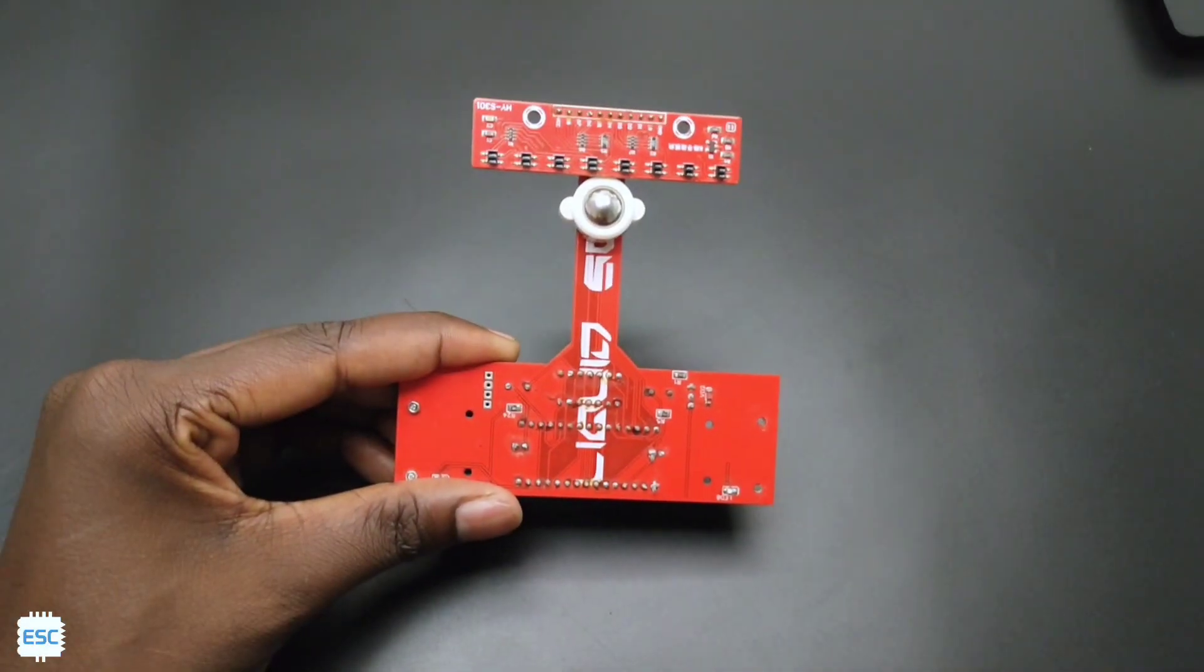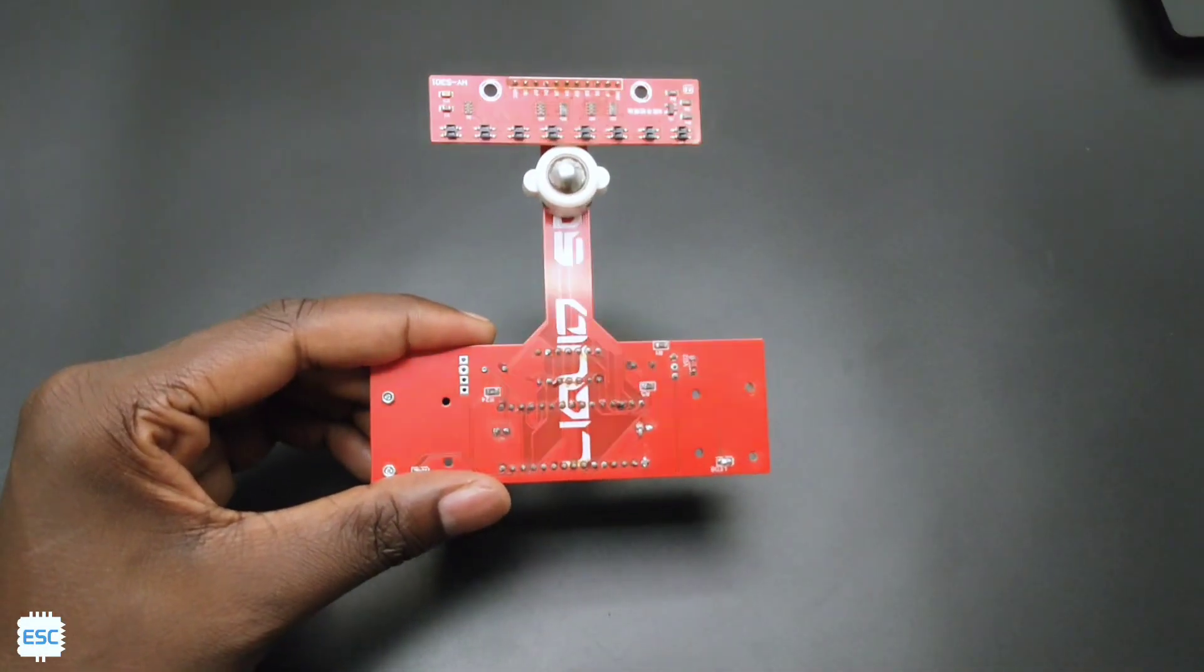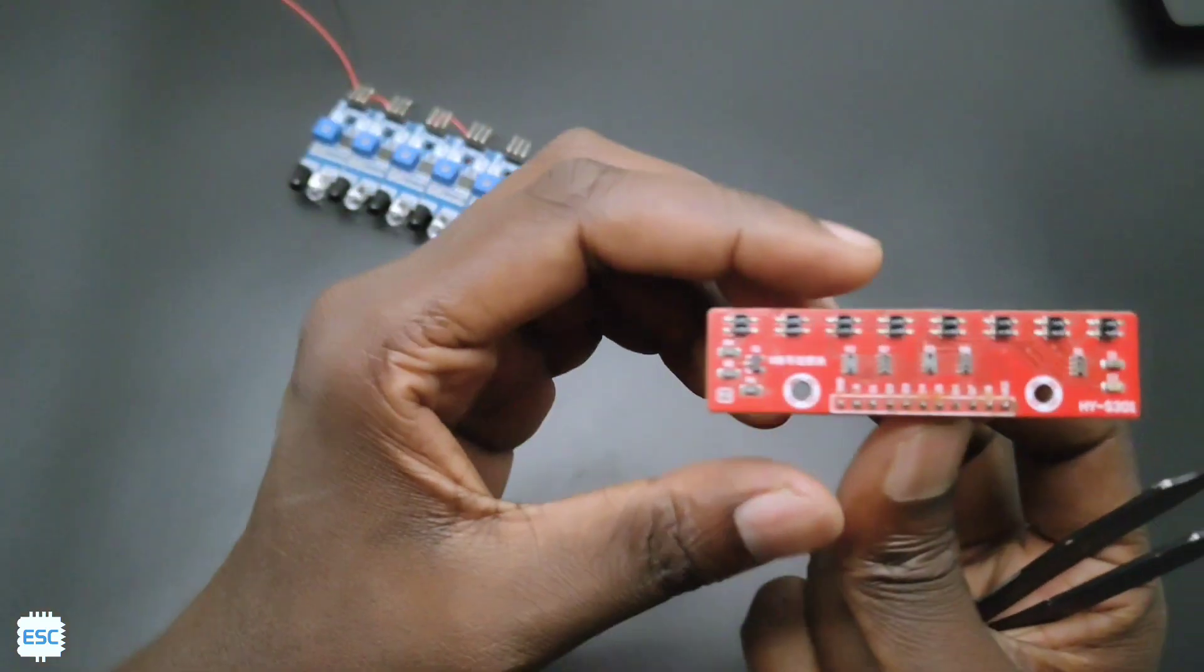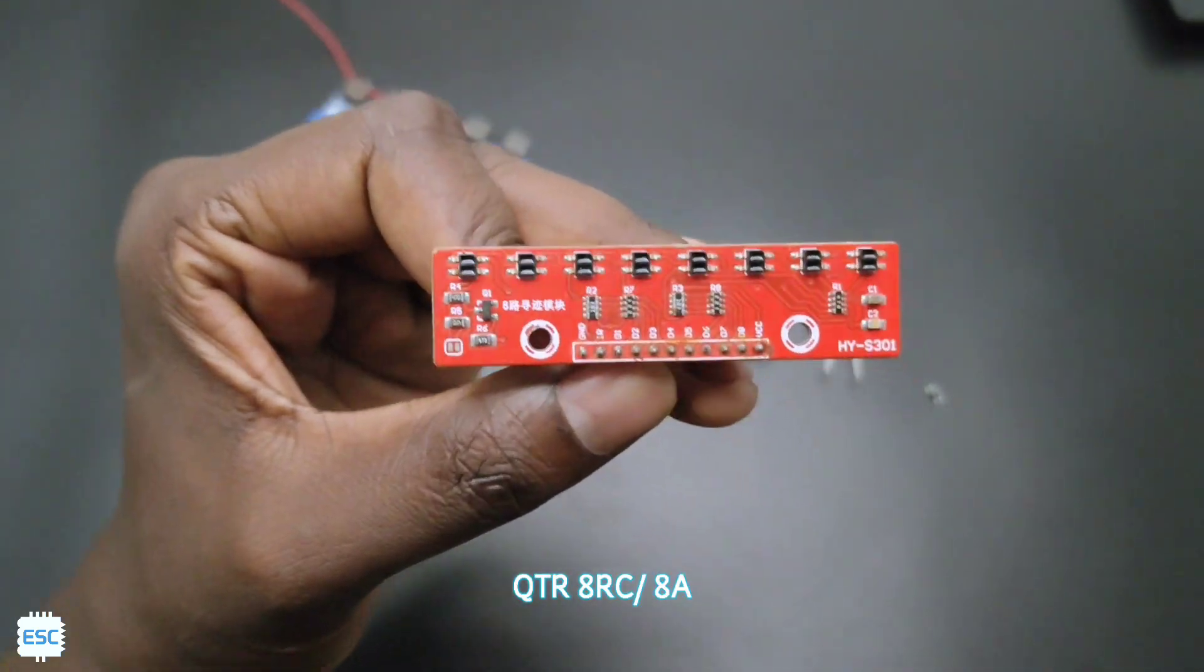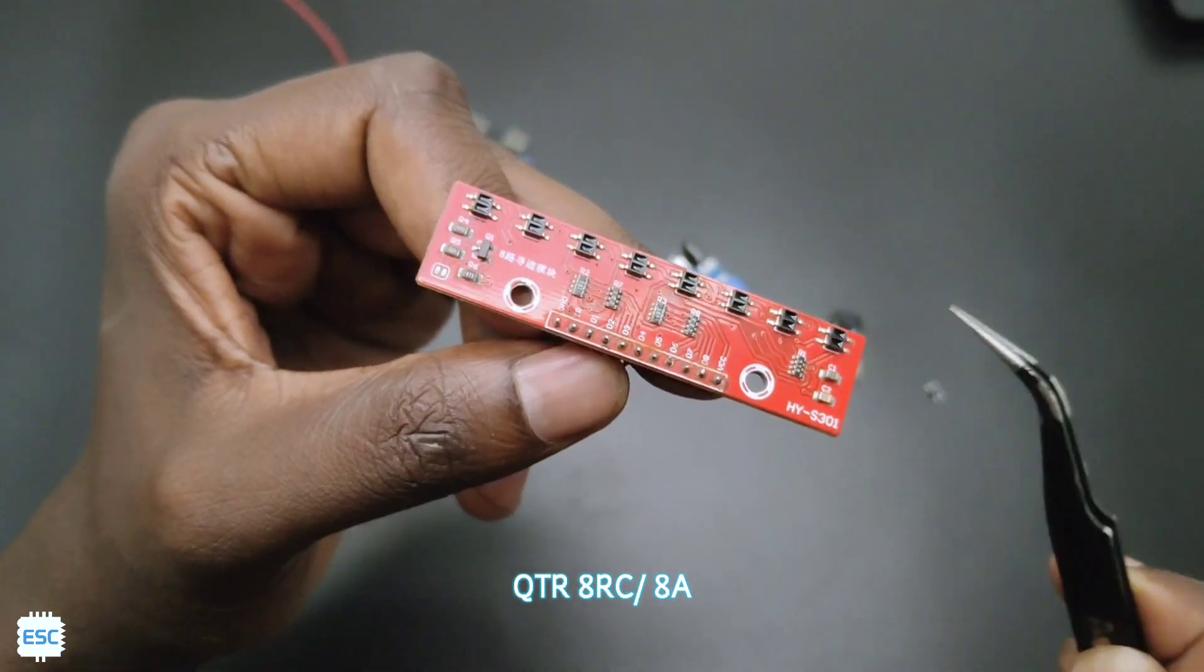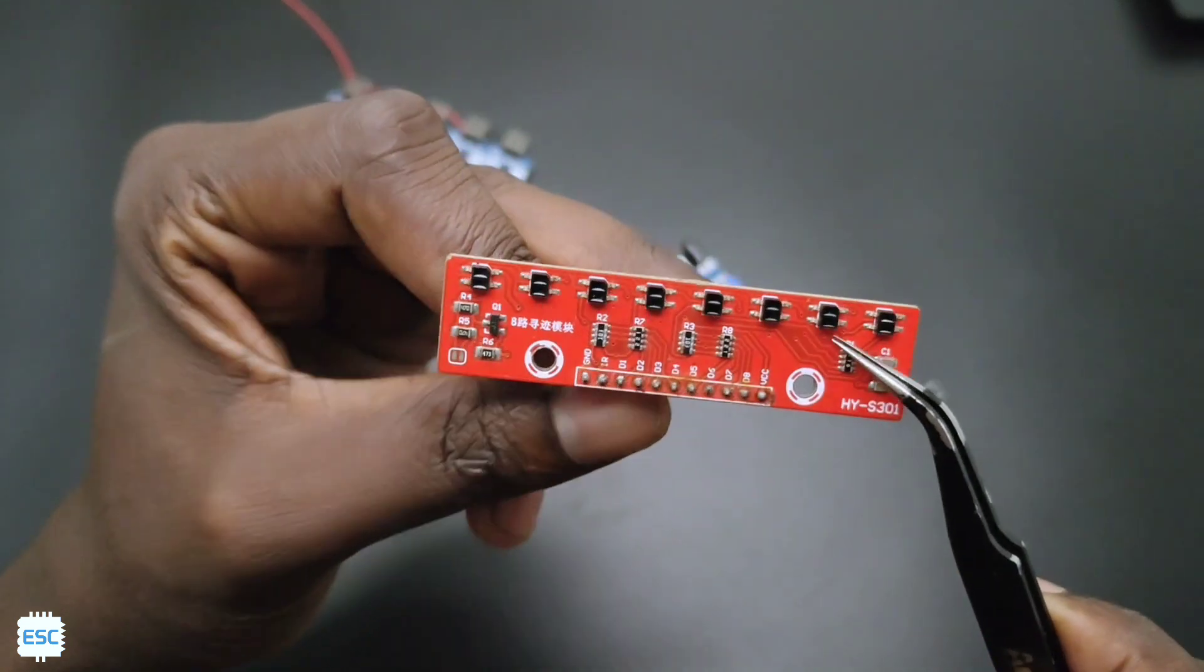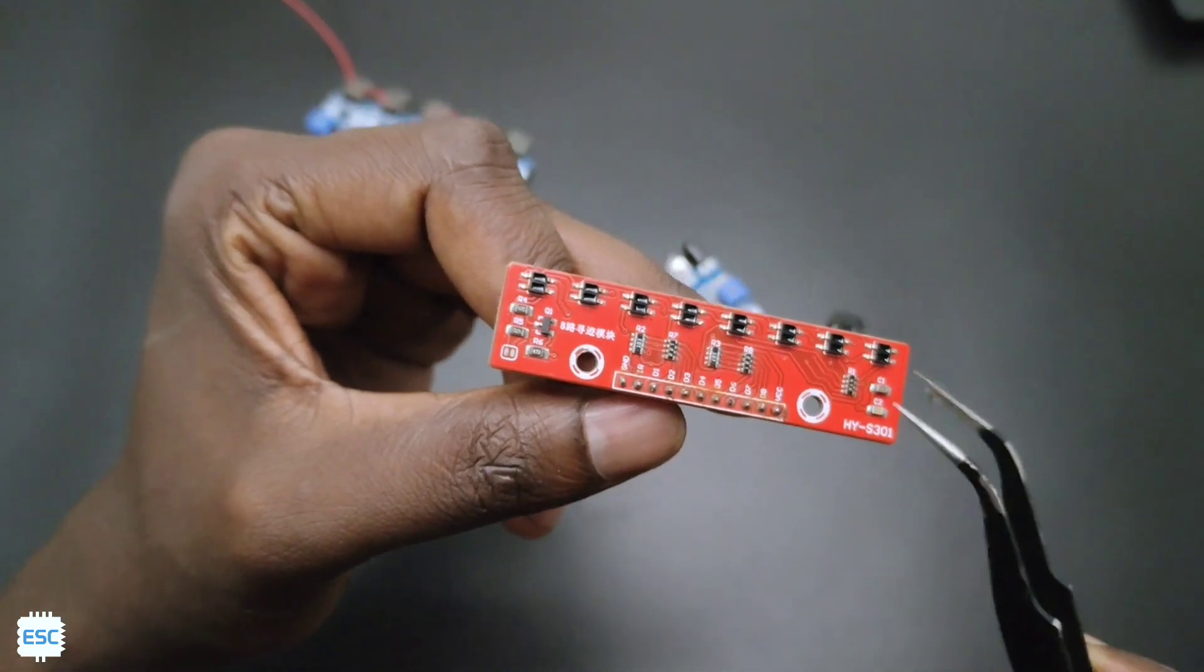Hello there. Making line follower robots is interesting, and detecting the line mostly uses infrared-based sensors. Here we have some commonly used infrared sensors. Let's start with the TCRT QTR 8-channel sensor, which is small but has some problems. The sensing distance is very low and we cannot intuitively control the sensitivity. Also, there are no indicator LEDs.